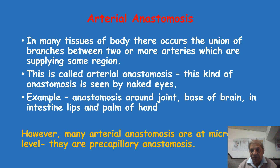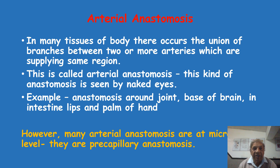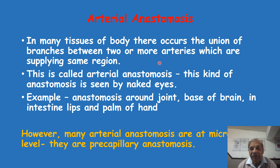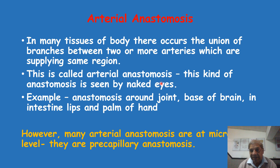Arterial anastomosis is a communication between adjacent arteries, which can occur at the macroscopic level or the microscopic level. In many tissues of the body, there occurs a union of branches between two or more arteries supplying the same region. When arteries running in the same region communicate or join with their branches, this is called arterial anastomosis.